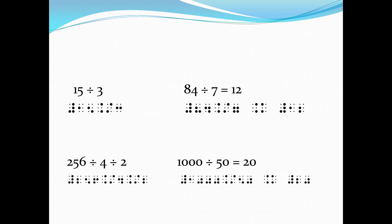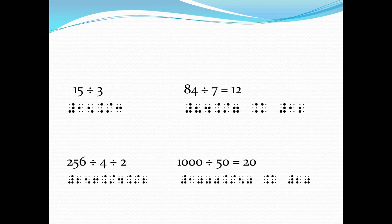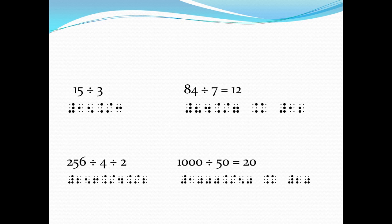For our final example, we have 1000 divided by 50 is equal to 20. In Nemeth, we write the numeric indicator, digits 1, 0, 0, 0, the division sign — dots 4 and 6 on the first cell and dots 3 and 4 on the second cell — then digits 5 and 0 for our divisor. We put a space before the equal sign — dots 4, 6 and dots 1, 3 — then a space again, and finally our quotient 20 with a numeric indicator.